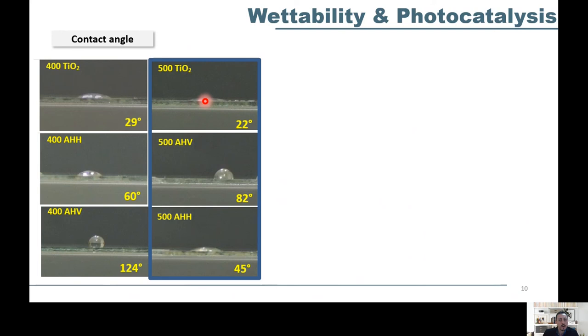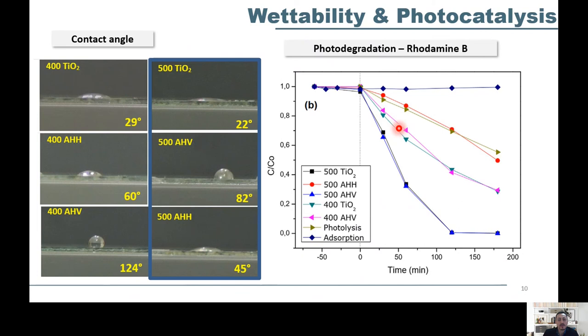In photodegradation tests we can highlight the titanium dioxide sample calcined at 500 degrees Celsius, as shown here in black, which presented better photodegradation results for methylene blue dye when compared to the titanium dioxide sample treated at 400 degrees Celsius. The sample with the hydroxy agent showed very low activity, which indicates that the film of this hydrophobic agent completely covered the titanium dioxide surface.